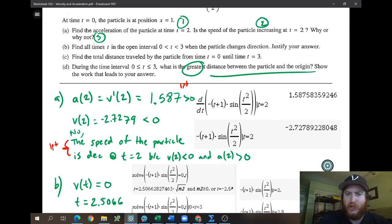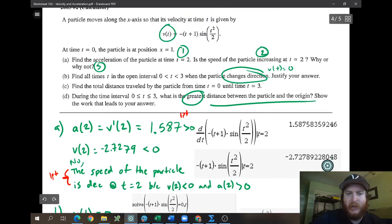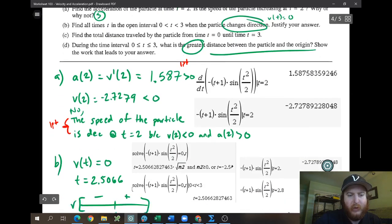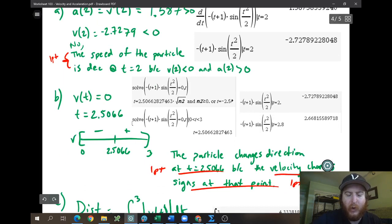All right, part B, find all times when the particle changes direction. Whenever we see that word changes direction, we're setting V of T equal to 0. So if they gave us position, we'll take the derivative and set the derivative equal to 0. But since they gave us V of T, we just set it initially to 0.